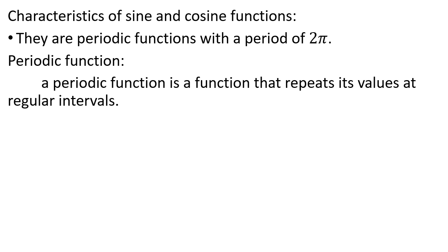For example, sin 0 equals 0. Sin 30 is equal to 1/2. Sin 390 is also equal to 1/2, because 390 equals 30 plus 360. The value repeats — that is the periodic function. In the interval of 2pi, the value is repeated.